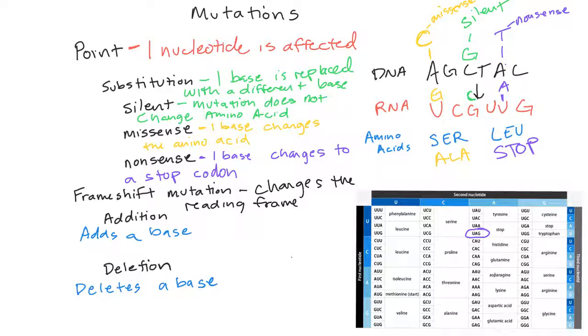So let's say we put another A in here. That would cause another U to be in here. And now the whole frameshift of the codons has shifted over. Now you have UCU and GUU, so that's going to give you different amino acids than what you originally had.